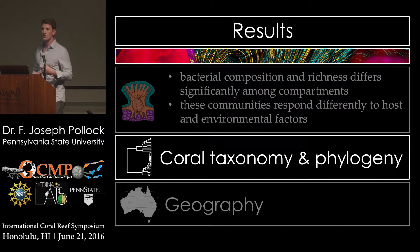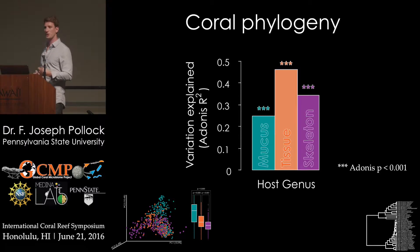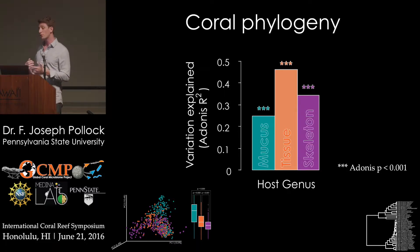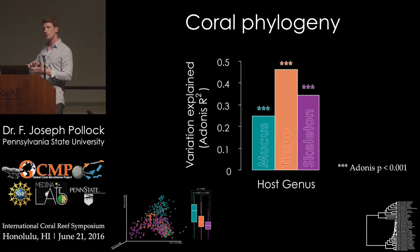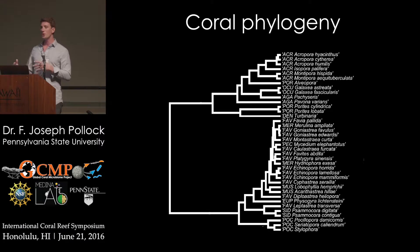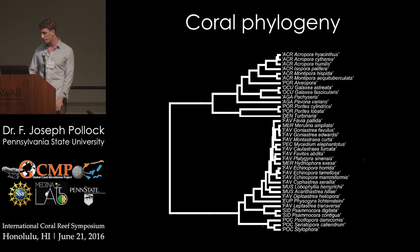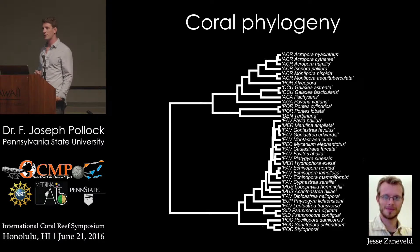Let's look at some things that may be driving bacterial community structure across coral taxonomy and phylogeny. The first thing we see is that coral host genus gives us a lot of information about bacterial community structure — coral genus explains a lot of the variation in all of our compartments, but it explains a particularly great deal of community variation within our tissue compartment. That makes sense, as those microbes within the tissue compartment are most closely associated with the host tissues. This leads us to ask: if we're seeing strong correlations between host genus and microbiome community composition, could parameters of that microbiome be following trends of coral phylogeny?